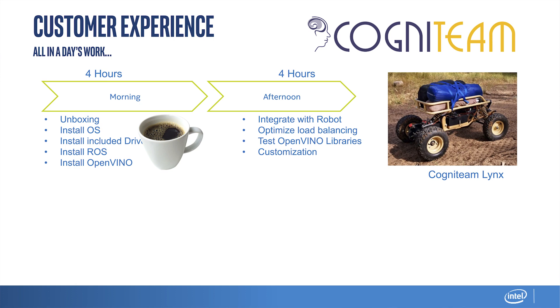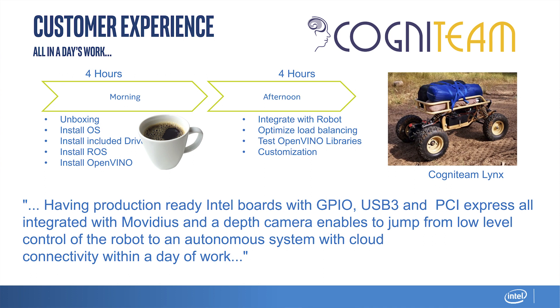What they told us was that having a production-ready Intel board with GPIO, USB 3, PCI Express — all integrated with a Movidius and a depth camera — enabled them to jump from low-level control of the robot to a fully autonomous system with cloud connectivity in a day's work. This is a really amazing story for those of you developing robots today, showing what you can accomplish in a short amount of time and the development costs that can be saved by going with one of these kits.